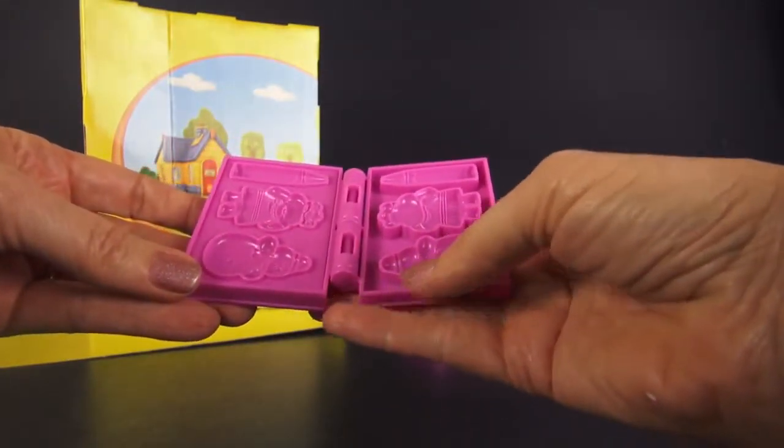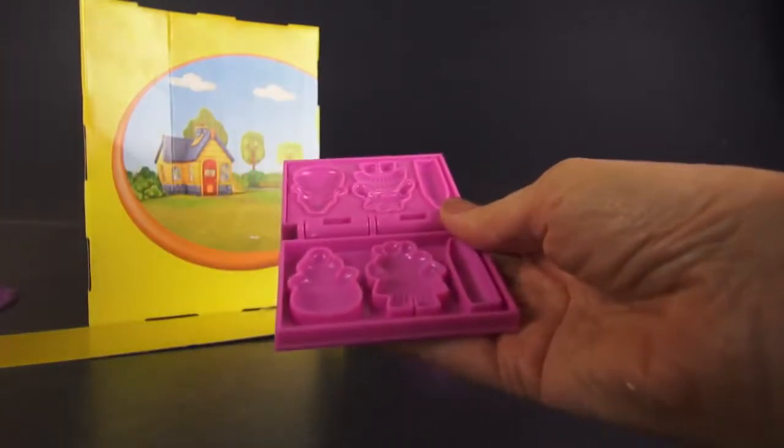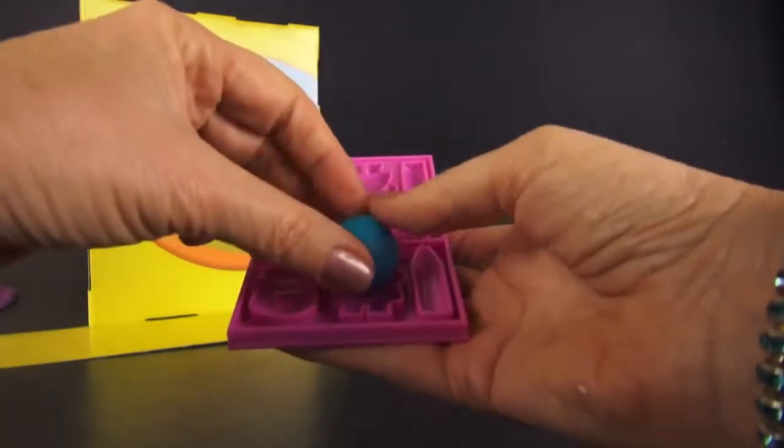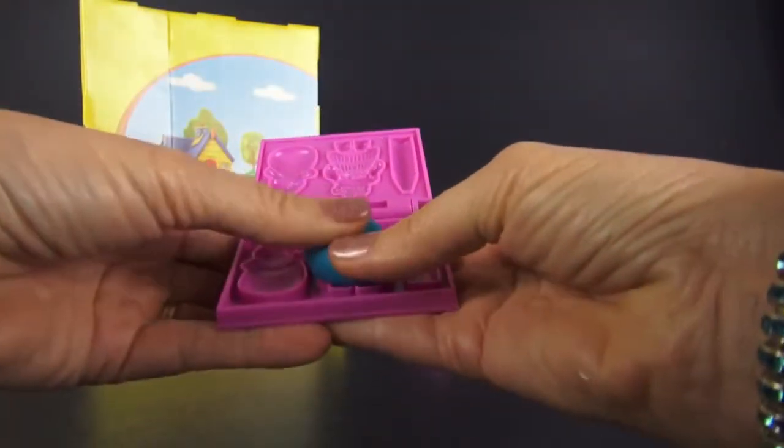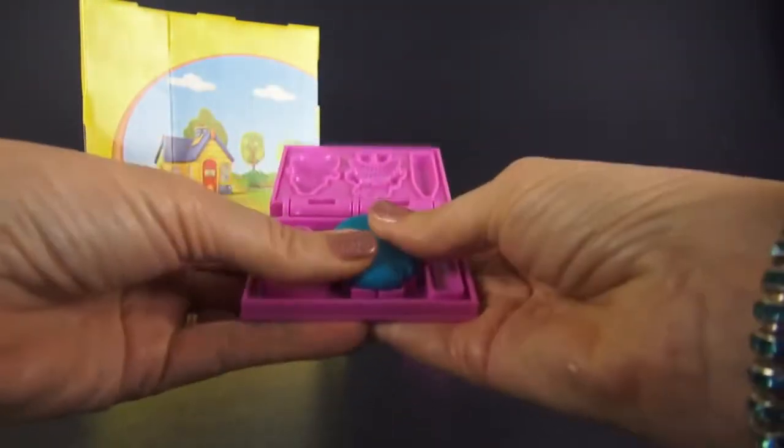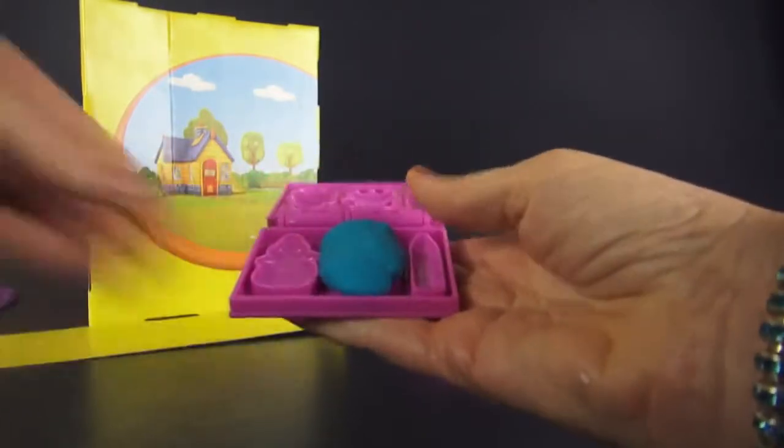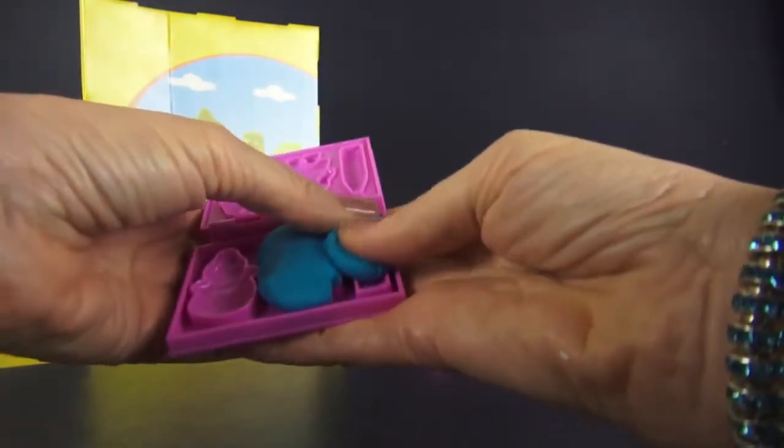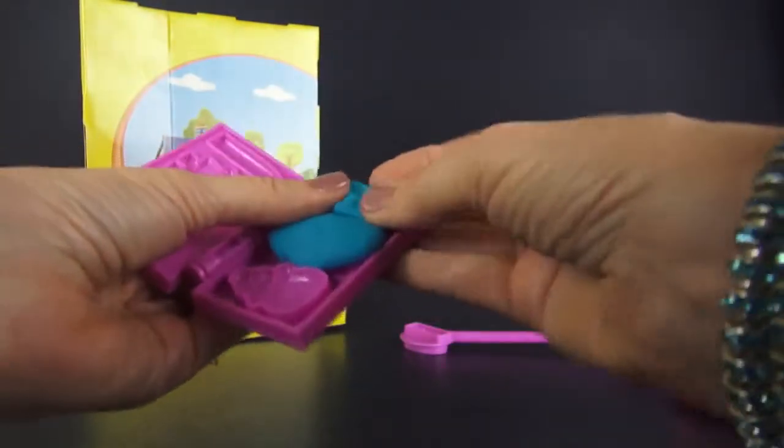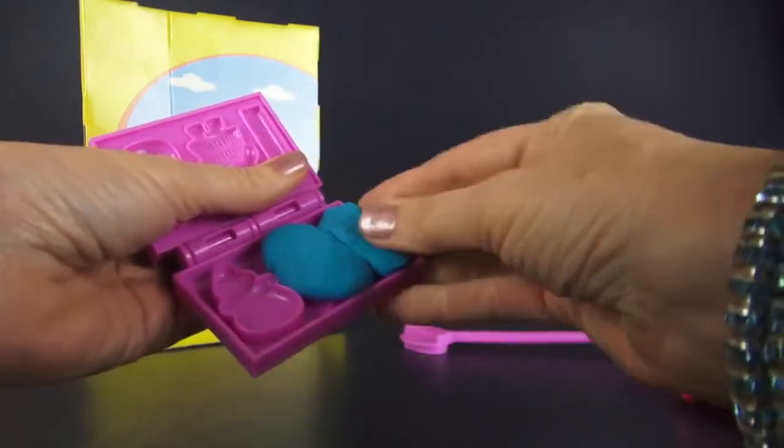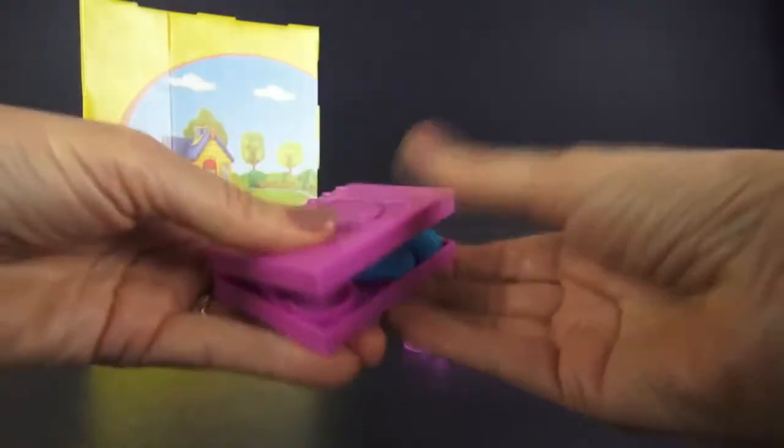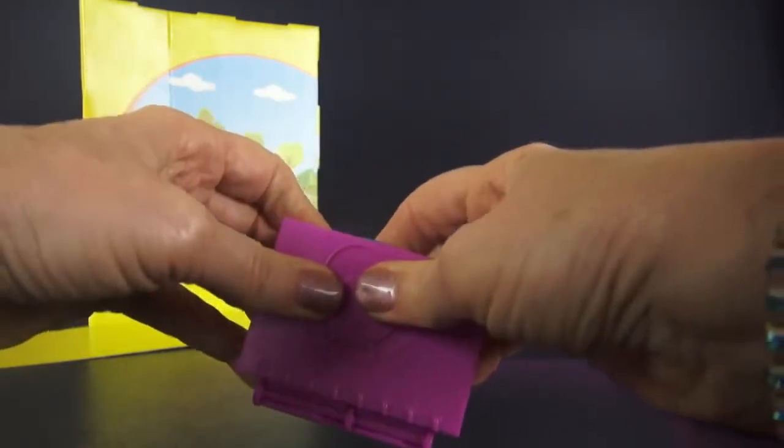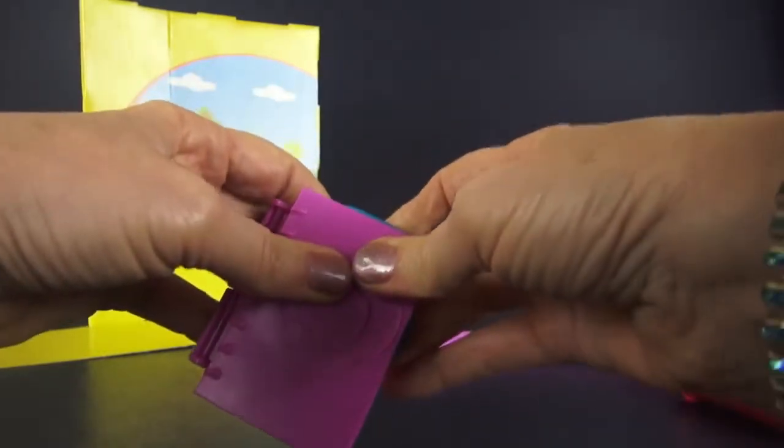So, let's start out by making Hallie, and Hallie is going to be, let's use some of the blue Play-Doh that came with this. And actually, because I'm using the same color, I'm going to go ahead and make the pencil too. Let's close up the book.